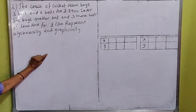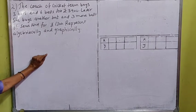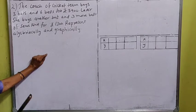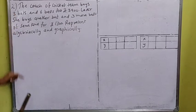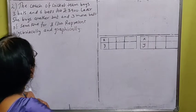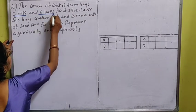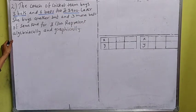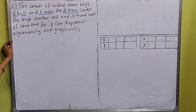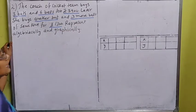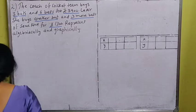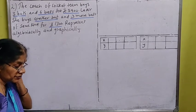Now let us see the second example — representing algebraically. Algebraically means converting the problem into the general form of a linear pair of equations. A coach of a cricket team buys 3 bags and 6 balls for ₹3,900. Afterwards, she buys 1 more bag and 3 more balls for ₹1,300.